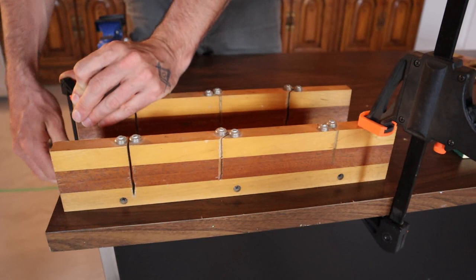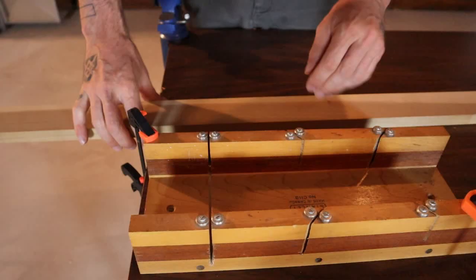You generally clamp corners kitty-corner from each other, and that's going to keep it in place while you're cutting. You want it to be hanging onto the box as well as your material.